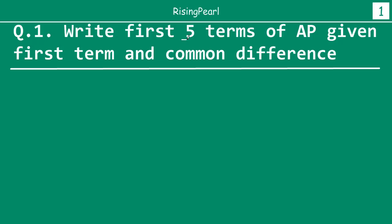So the first question goes like this: write the first 5 terms of an arithmetic progression — AP is the abbreviated form for arithmetic progression — given the first term and the common difference. So let's say the first term is given as 2 and the common difference is given as 3. How do we find out the first 5 terms?